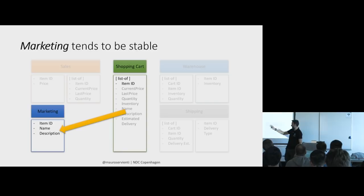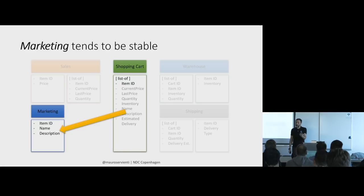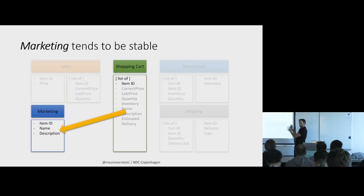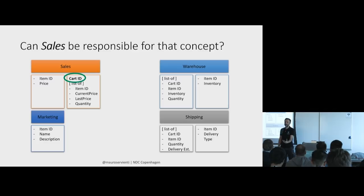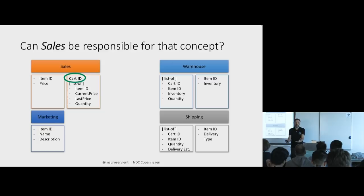Marketing doesn't need a shopping cart concept for this specific requirement. Marketing might need a cart concept to get stats about usage, but for displaying name and description, it doesn't care about shopping carts in general. Do we need a shopping cart at all at this point? Not really. What we can do is assign the shopping cart concept as ownership to sales, saying sales owns the cart ID. Whenever a new user clicks the shopping cart for the first time, a cart ID must be created — sales is responsible for generating the new cart ID. That's all we need to say a cart exists.